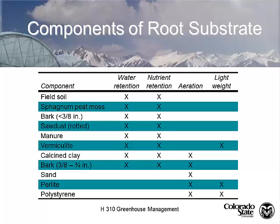Looking at a snapshot of components: field soil has good water retention and nutrient retention, no air, and it's heavy. Sphagnum peat moss has good water retention, good nutrient retention, but little air space and it's heavy. Composted pine bark, ground at a 3/8-inch grind, has all the same characteristics. It's not until you get into products like calcined clay — which is the raw form of kitty litter — that you get lightweight options. Vermiculite is also lightweight. You can blend all these products together to get a good ideal mix.